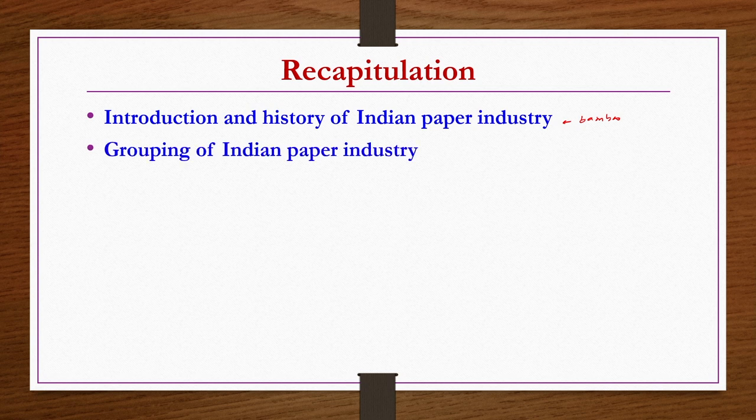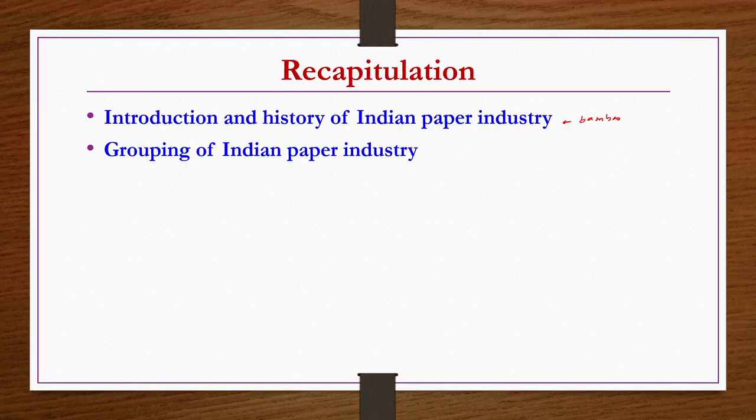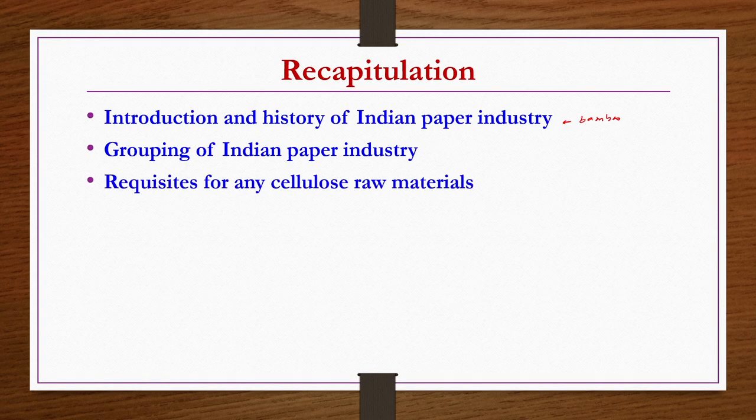We have seen the grouping of Indian paper industry, which has been done based on the size of the units and based on the sources of material to produce the pulp and paper. Six different types of units or groups are possible. We also understood that cellulosic raw materials are a very important part in the pulp and paper industry.